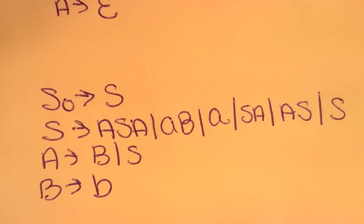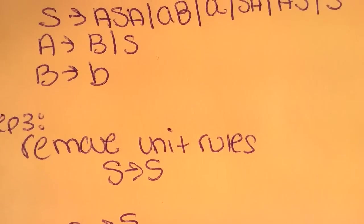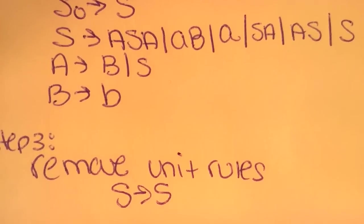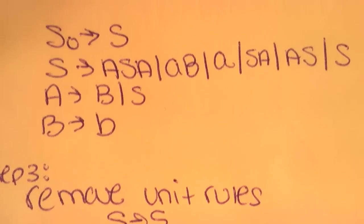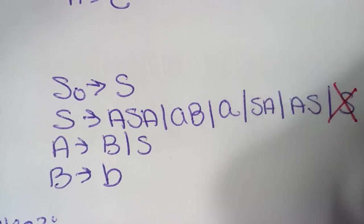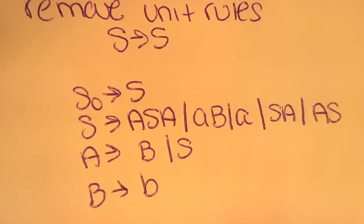The second rule, or the second step to do now is to remove all of our unit rules. So first we're going to remove S points to S, which is the simplest. Since S refers to itself, we can just cross S off. And our new equation looks like so.